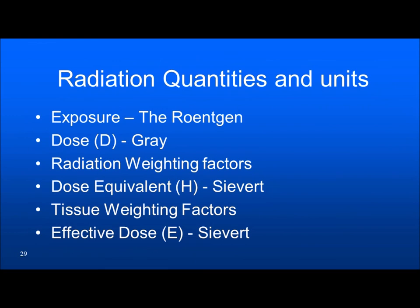So to summarize: we learned about exposure — unit is roentgen. Absorbed dose — unit is gray. Radiation weighting factor and dose equivalent — unit is sievert. Tissue weighting factors and effective dose — again sievert. Sievert is the unit used when you multiply by radiation weighting factor or tissue weighting factor; until then, it is gray.